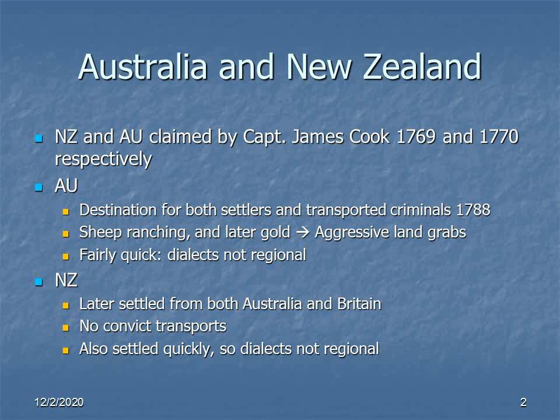There are some small differences. People in, for example, northeastern Australia have a bit of a different dialect from most of the rest of the country. But broadly speaking, the dialects of Australian English are sociolects rather than regional dialects.